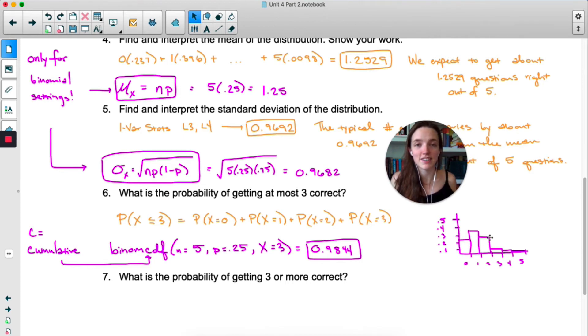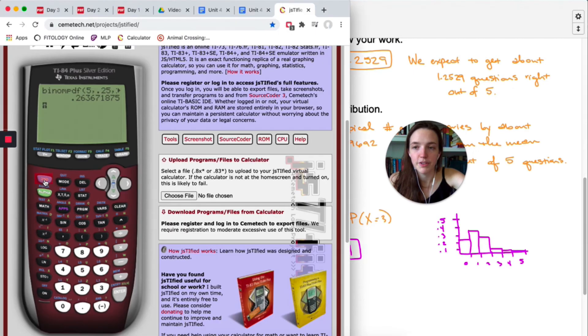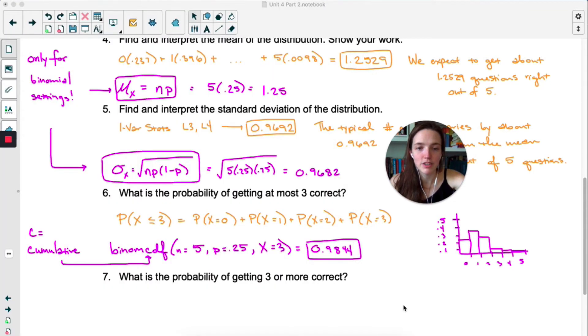cdf gives you everything up to and including the x value you put in. So since we want x less than or equal to 3, we're going to do binom cdf, 5.25, and then 3. You find this in the exact same place as before. It's second and then distribution, and it's right underneath pdf, binom cdf. The same menu will pop up, or you'll just have to type things in separated by commas. And that's so much easier than doing pdf for all these individual probabilities and adding them together. As long as you remember that the c stands for cumulative, so it's everything up to and including that x value.